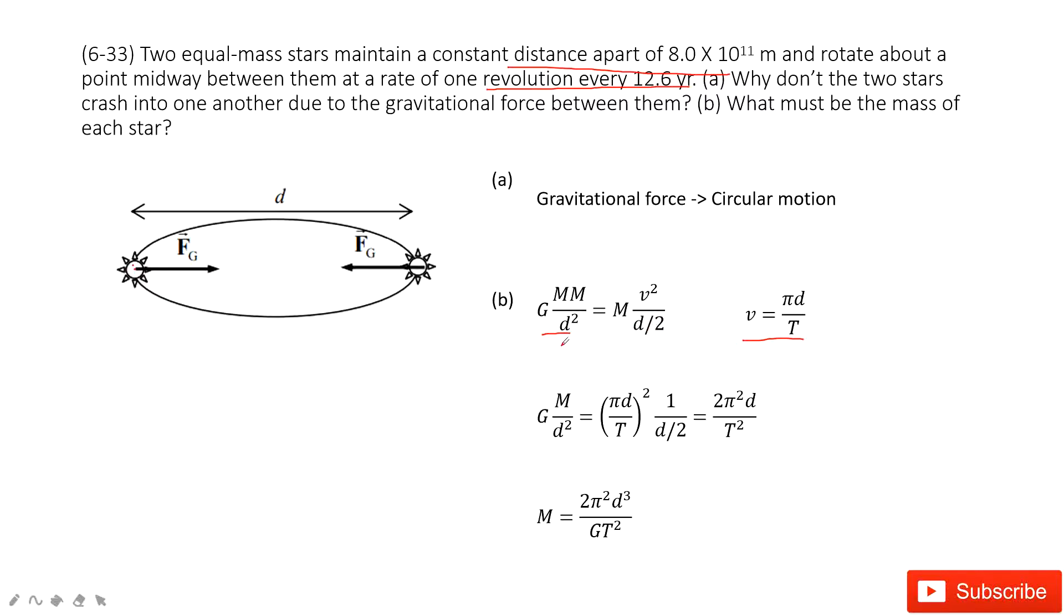So we input the v inside. It looks like this one. After it looks like this one, we can just make this term more simple. Simplify this term. It is 2 pi squared d divided by t squared.